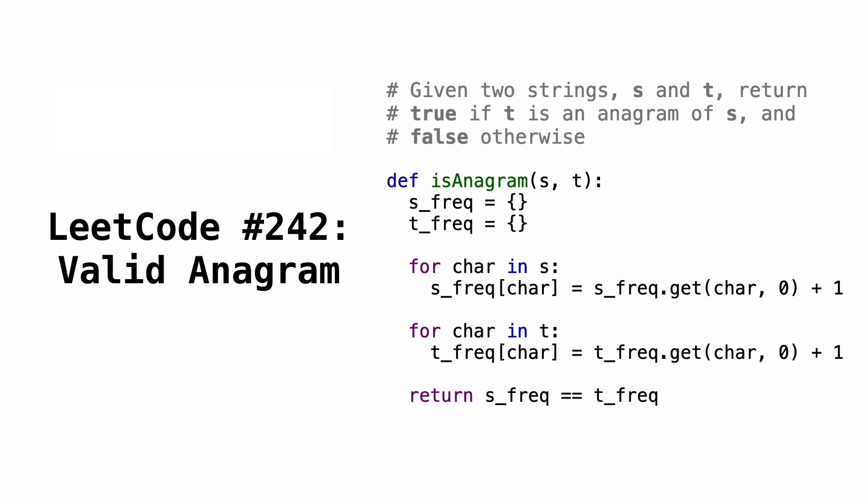In this video, we'll go over LeetCode question number 242, valid anagram. Given two strings, we have to return true if they are anagrams of one another and return false otherwise. Now an anagram is a word that can be formed by rearranging the letters of another word. For example, night and thing are anagrams because you can rearrange the letters of each word to form the other.